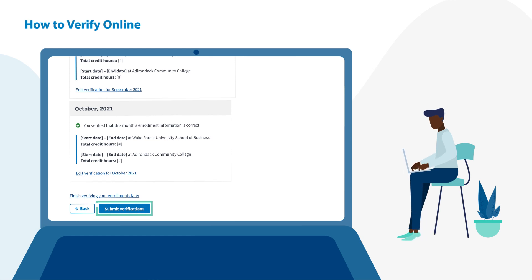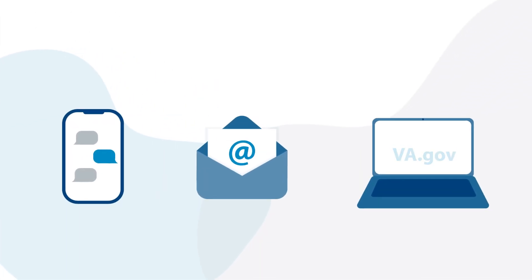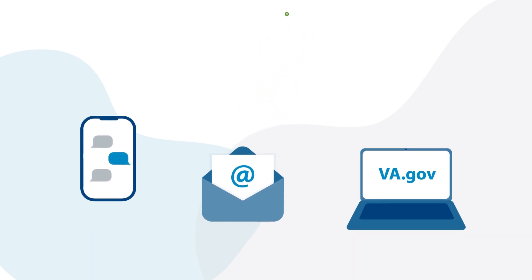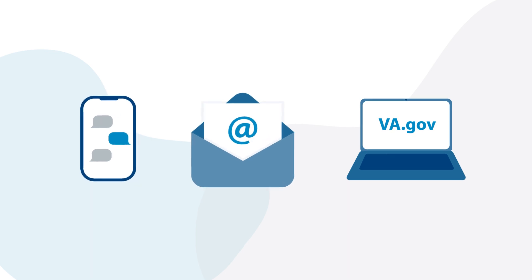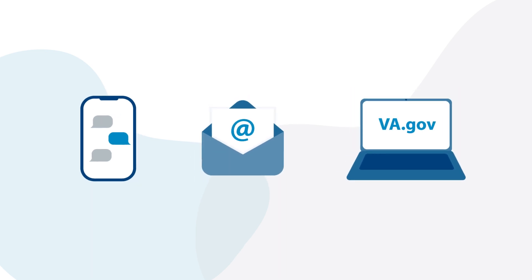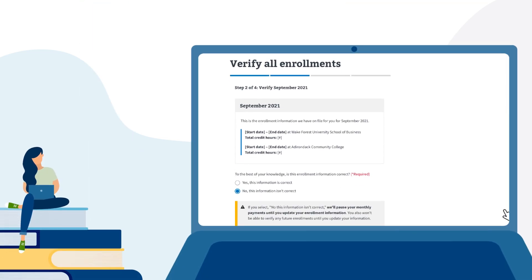It's as simple as that. Verify through text, email, or online to continue receiving your payments. If your enrollment status changes, please respond to VA's text, email, or online verification prompt appropriately. Then contact your school certifying official to ensure your enrollment with VA has been adjusted to prevent any overpayments.